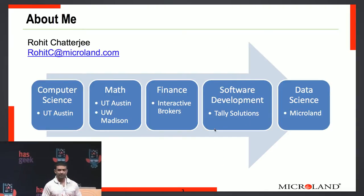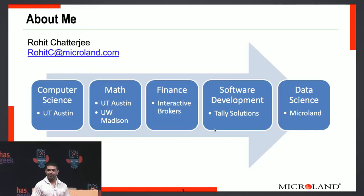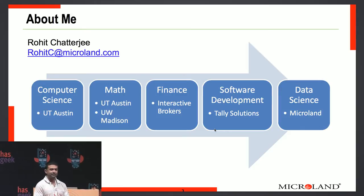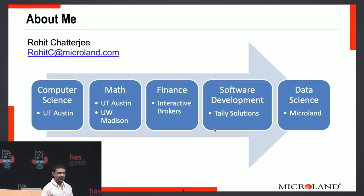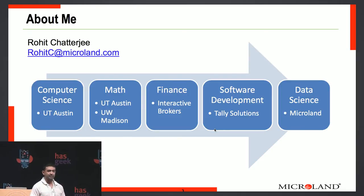My name is Rohit Chatterjee. I went from computer science to math, and then I liked math more than math liked me, so I got out of math and moved over to finance. Then I got tired of stealing people's pension funds, so I came back to software and now I'm a data scientist at Microland. Microland does IT operations management and I'm building predictive systems to forecast problems, classify them, and suggest auto remediation.